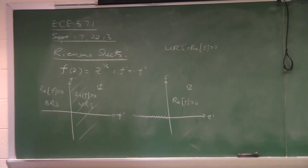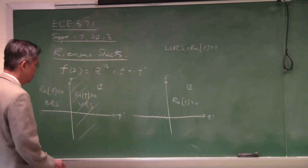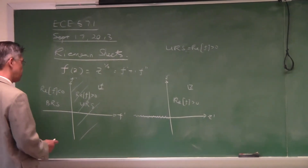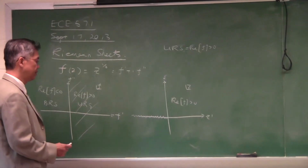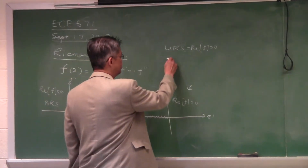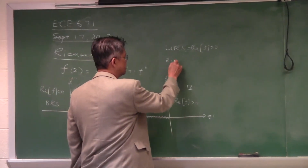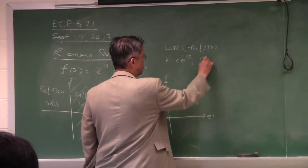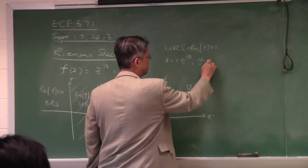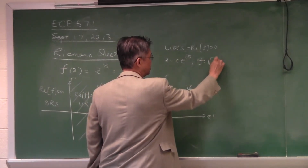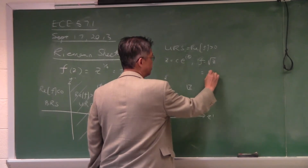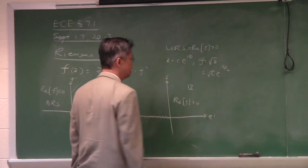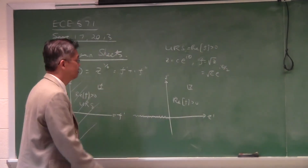So as you merge with the value of z, say z = c·e^(iθ), the square root of z — f = √z — would be √c · e^(iθ/2). So you can look at this mapping. As you merge with the z value here, that point there would go back to √c, since theta equals zero in that mapping.